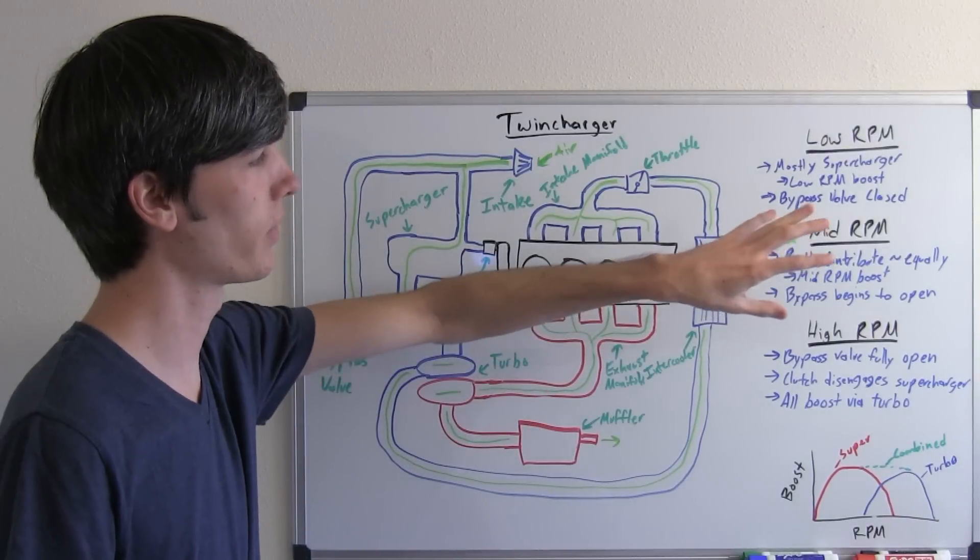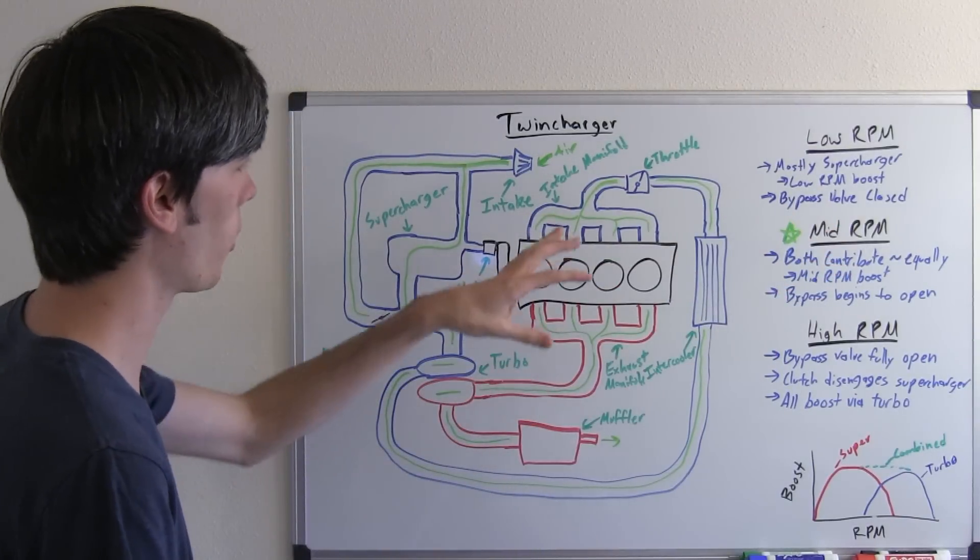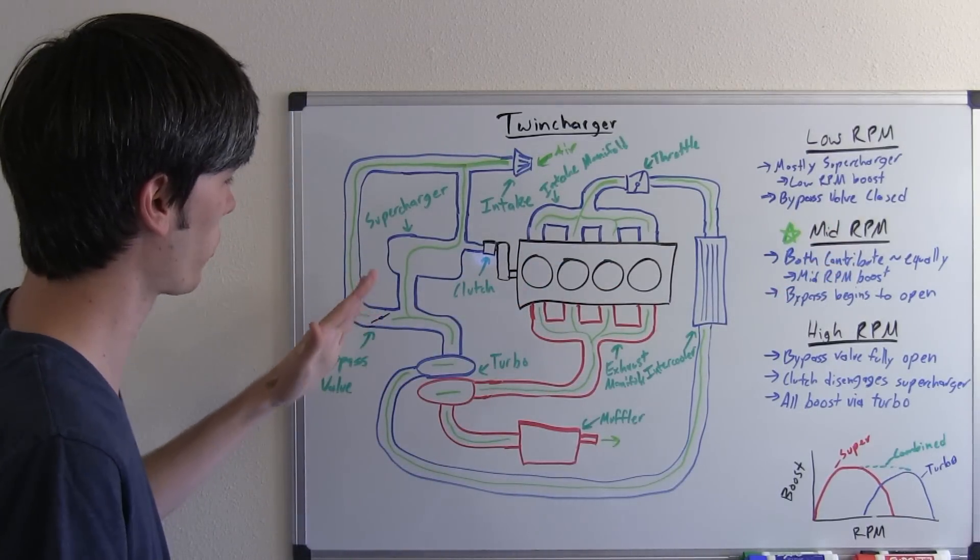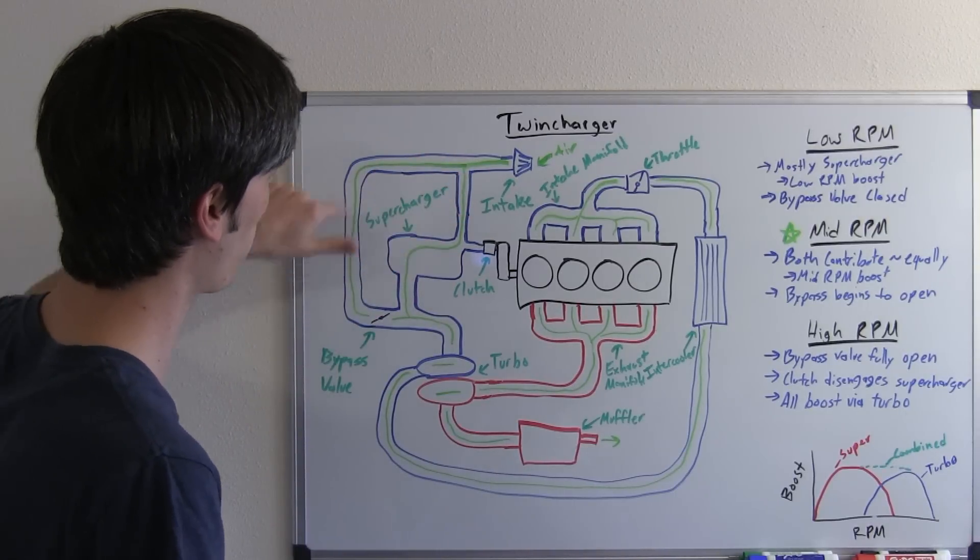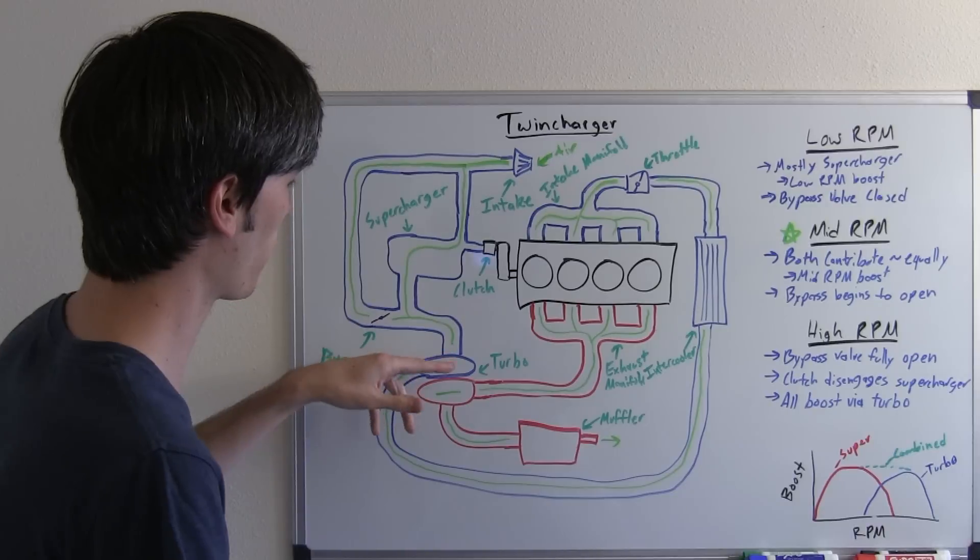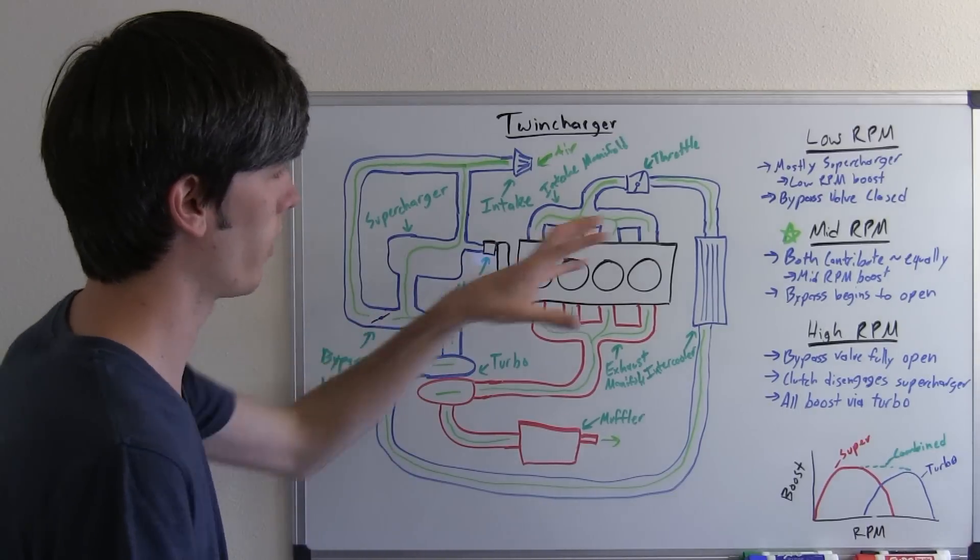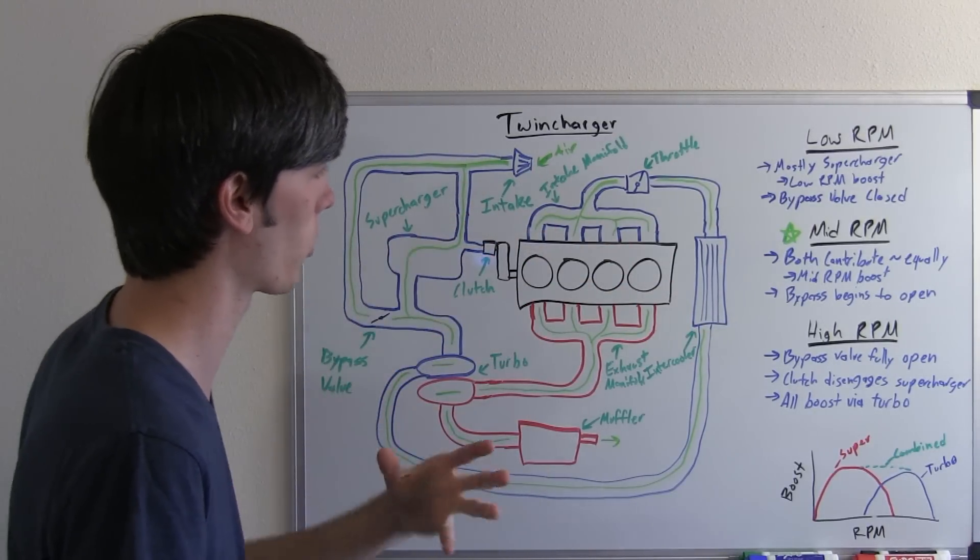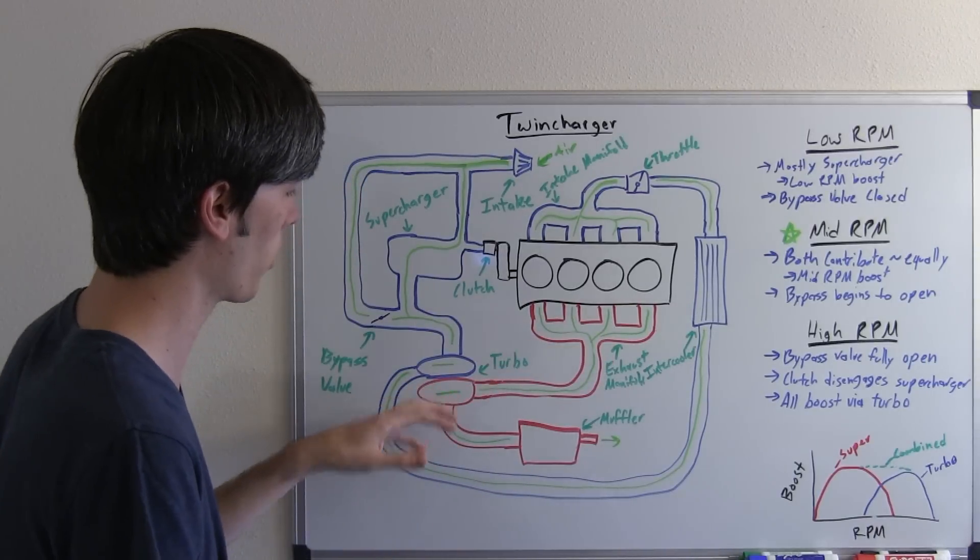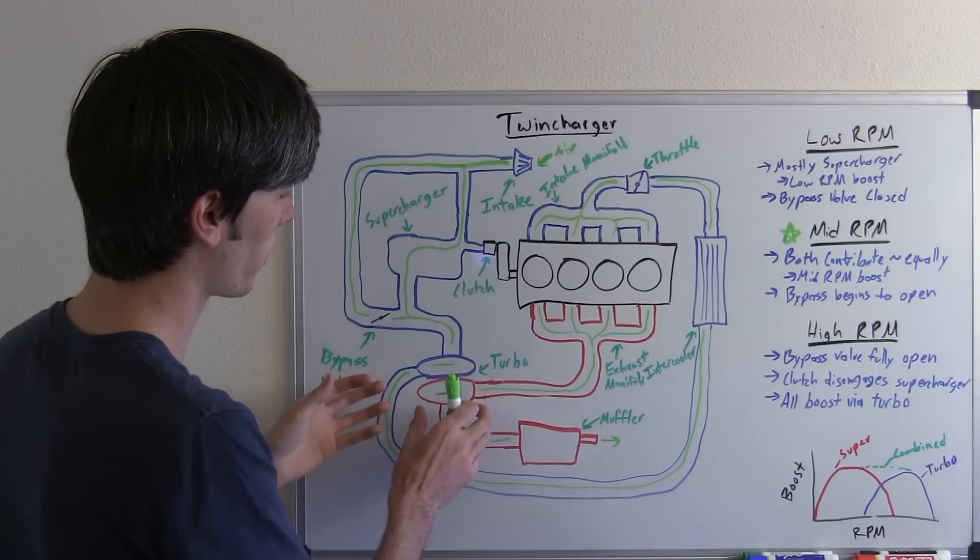So now let's look at what happens at your mid RPMs. Basically here you're going to have your bypass valve start to open up, and once that happens it's going to allow some of the air to bypass the supercharger and go directly to the turbocharger. Now at your mid RPMs you're going to be having more exhaust created because you're burning more fuel, and so your turbo is going to start to spool up.